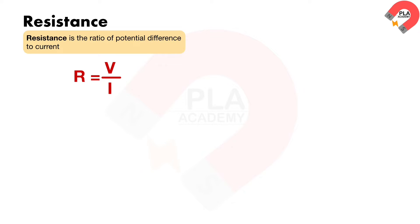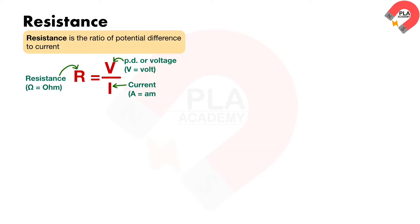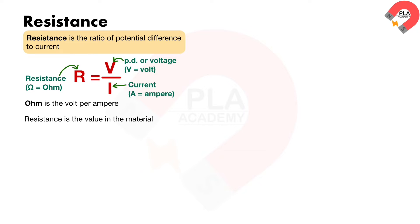R equals V over I. Where R is the resistance in ohms, V is the potential difference in volts, and I is the current in amperes. So, ohm is the volt per ampere. The resistance is the value in the material that resists the current from flowing through it.